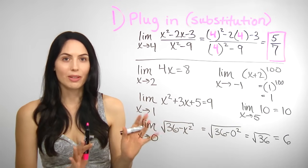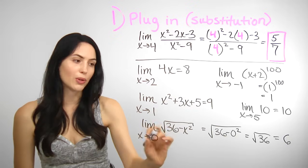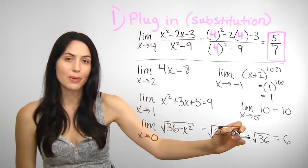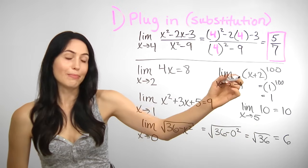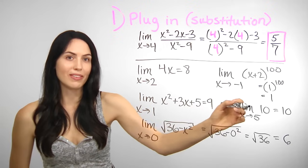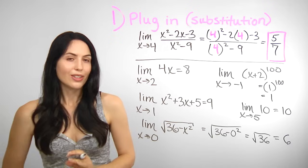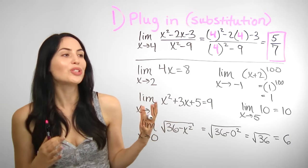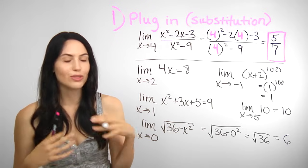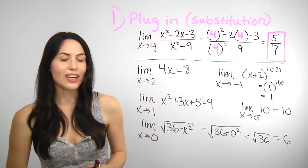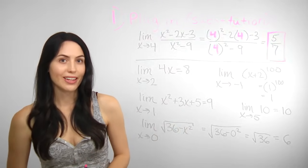These are all other limits you can find just by plugging in. Any polynomial you can plug into. A square root of something that ends up being a square root of a positive number, or square root of zero. Something to a power, or the limit of a constant — a number is just that number. Those are all great, but usually finding a limit is not this simple. You might see this once out of twenty times. Usually you'll have to use another way.